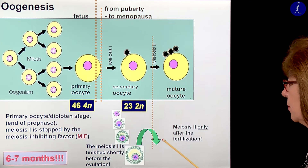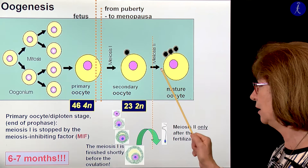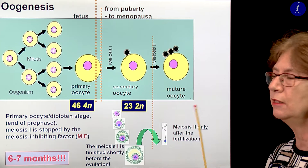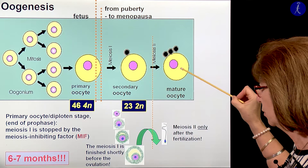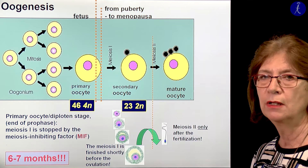The sperm cell fertilizes this secondary oocyte, and then the second meiotic division is finished, giving us the mature oocyte, which is already fertilized. Through the second meiotic division, the division is again asymmetric — one cell takes most of the cytoplasm, we get another polocyte, and the first polocyte sometimes divides, sometimes not. So we end up with two or three polocytes.